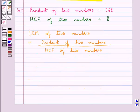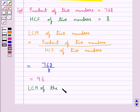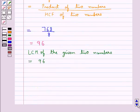And this is further equal to 768 divided by 8 which is equal to 96. So we get the LCM of the given two numbers is equal to 96. So 96 is our final answer.